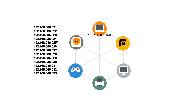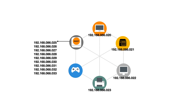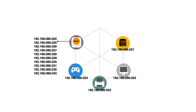DHCP will then keep track of which addresses have been assigned to which devices to ensure that there are no address conflicts. The type of IP addresses assigned by DHCP are known as dynamic IP addresses. This is because an IP address will only be temporarily issued to a device while it's connected to our home network. So when we remove a device from our home network, the IP address that it is using will be returned to the DHCP address pool.